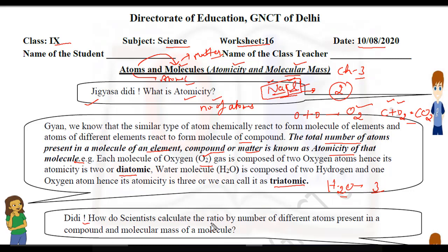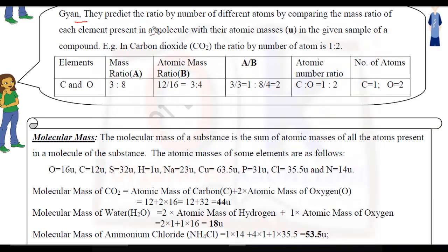Now, how do scientists calculate the ratio by number of different atoms present in a compound and the molecular mass of a molecule? In the last video we discussed atomic mass of atoms; now that we have molecules, they will have molecular mass. Scientists calculate the mass ratio by comparing the mass ratio of each element present in the molecule.